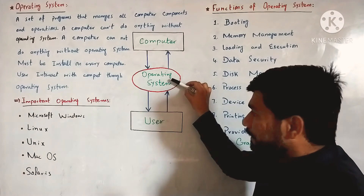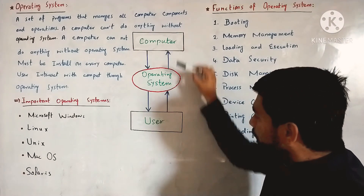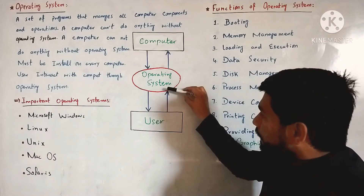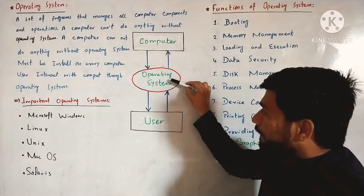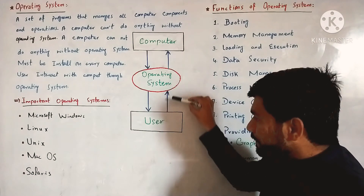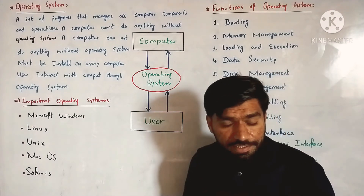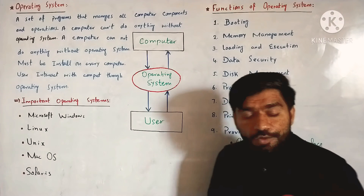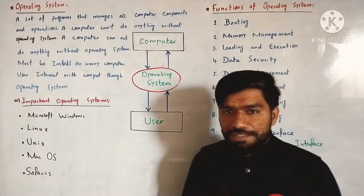This is our operating system — it is software. This is our computer and user. The operating system, computer, and user form the interface. This simple diagram helps you understand the operating system. It means that if we don't have an operating system in our computer, then we cannot use the computer.